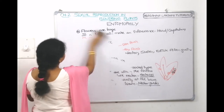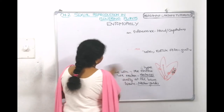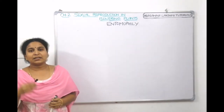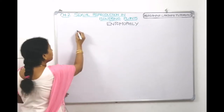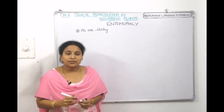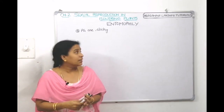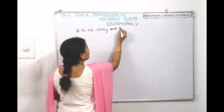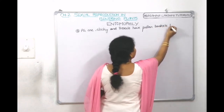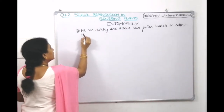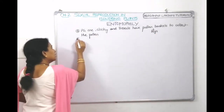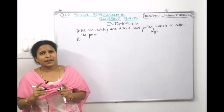The eighth characteristic is that pollen grains are sticky, allowing them to stick to the body of insects. Insects also have pollen baskets on their legs to collect pollen grains.